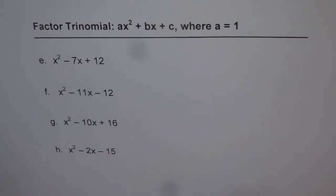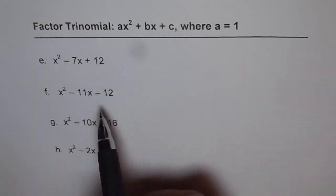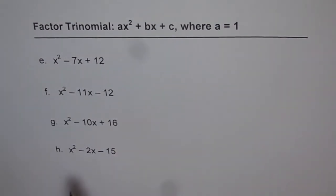So the method is, as we learned in the last video, that we are looking for two numbers whose product is c and whose sum is b. That means product is one of these numbers, and the sum is these numbers.